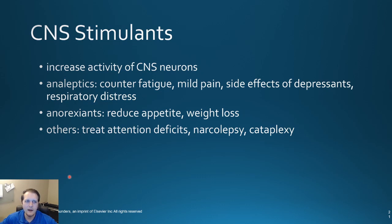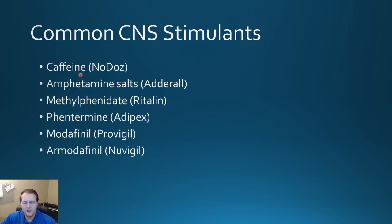We do have medications that stimulate the CNS, and caffeine is considered a CNS stimulant. It can be used to counter fatigue, maybe used for some mild pain like we saw with migraine treatment, and can help with weight loss by reducing appetite. Some of them are actually able to be used to treat things like attention deficit disorders, narcolepsy, or cataplexy. We also have things like amphetamine salts and methylphenidate — these are going to be controlled substances because they are derivatives of amphetamines, and we'll talk more about this in the ADHD section next chapter. There's also phentermine, which is a very good appetite suppressant — also a controlled substance because these can cause a physical and psychological dependence.